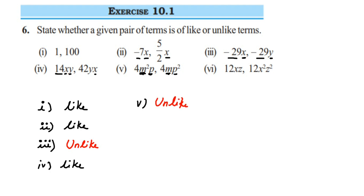The last question: we have 12xz and 12x²z². The variables x and z are present in both terms, but look at the powers — in the second term they are squared, while in the first term the power is 1. So they are unlike terms.